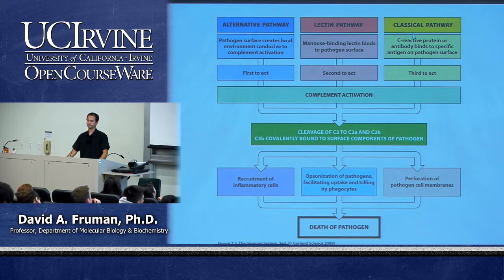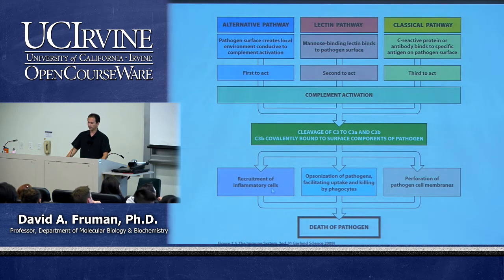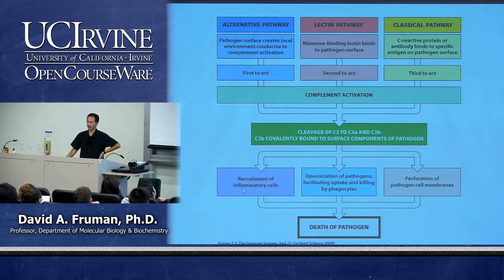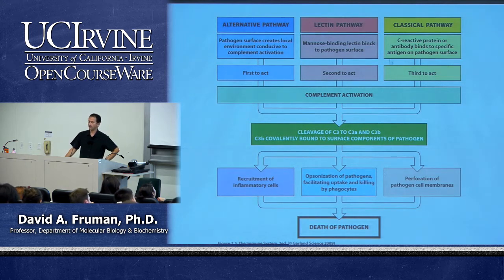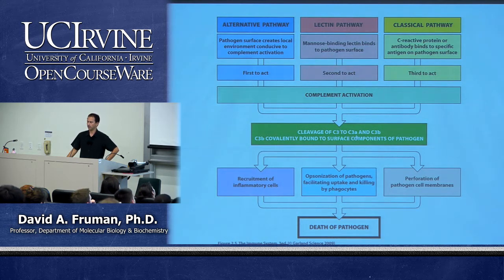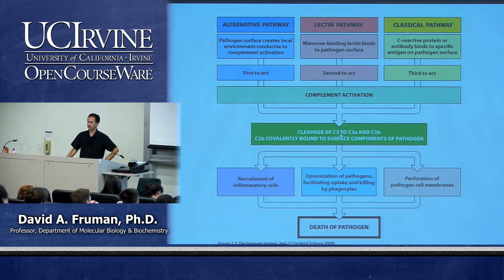The three functions of complement activation are: first, recruitment of inflammatory cells like neutrophils and monocytes, which come into the neighborhood and become macrophages; second, opsonization, which facilitates phagocytosis; and third, complement components can literally poke holes or perforate the membrane of pathogens. All three pathways converge and all three outcomes occur no matter which pathway activates C3 cleavage. Together these three functions lead to the death of the pathogen.